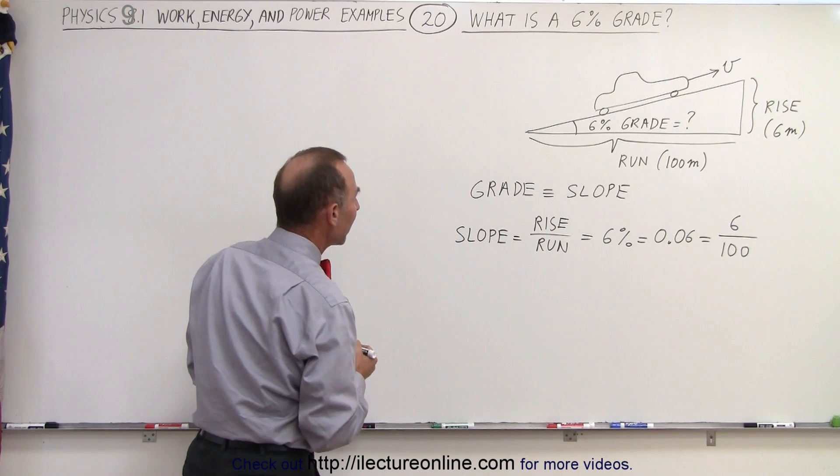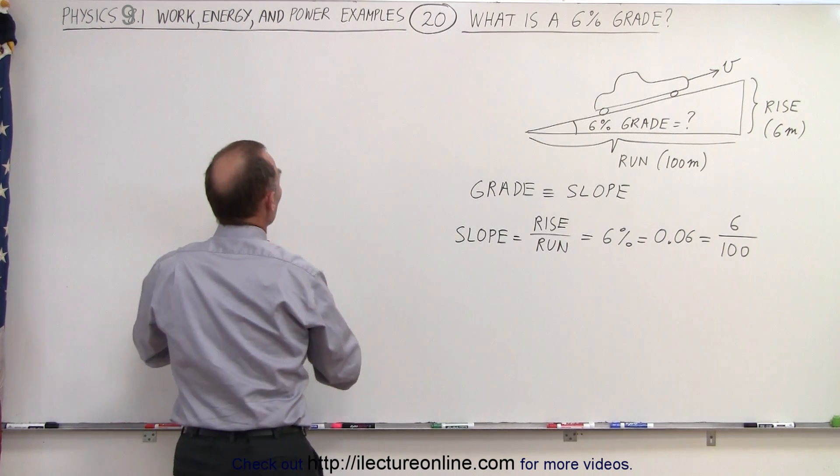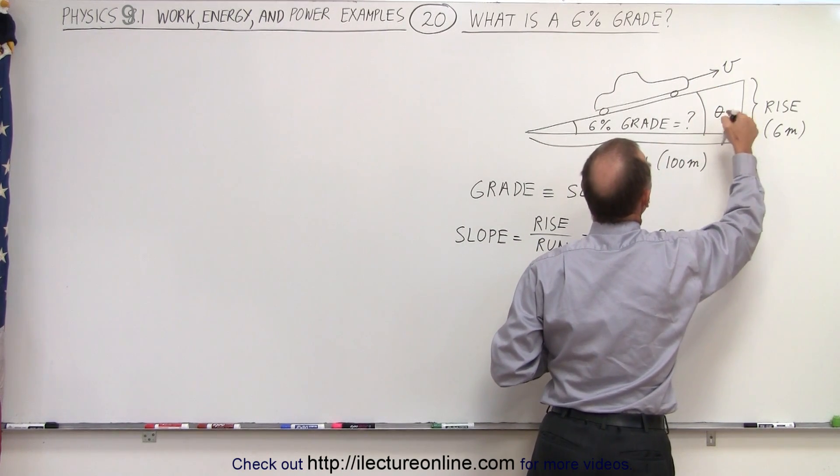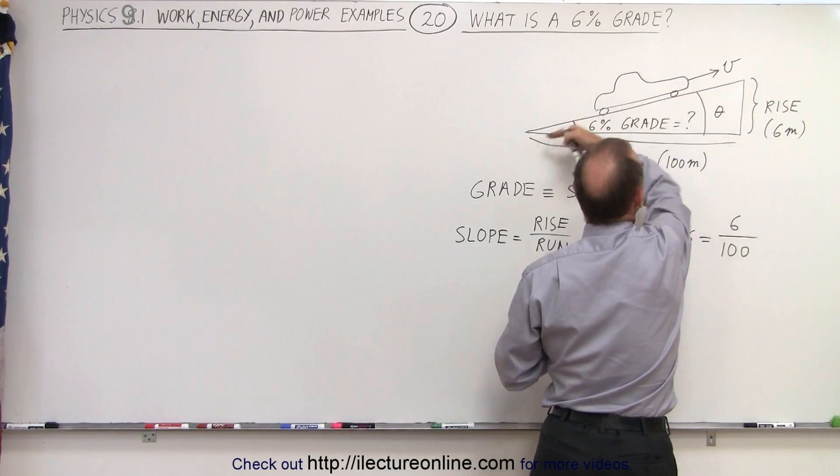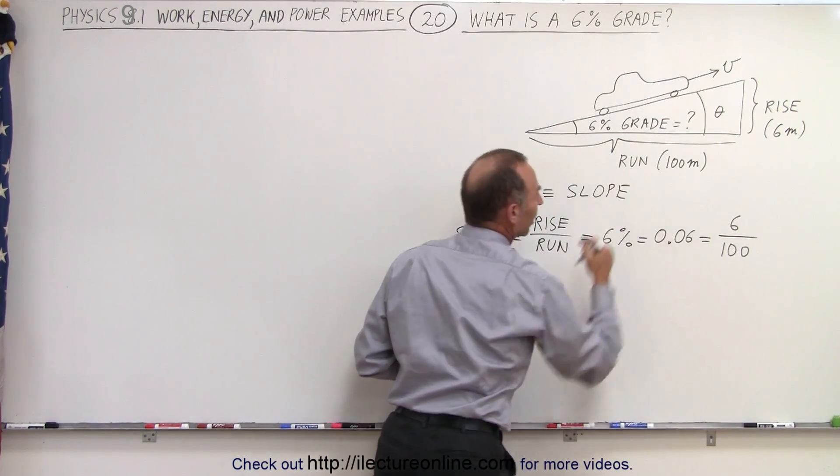To show you why that is the case, let's calculate the angle. So what we're going to do is we're going to try to calculate the angle theta, and from that we're going to calculate the distance traveled by the car, which will be slightly more than 100 meters.